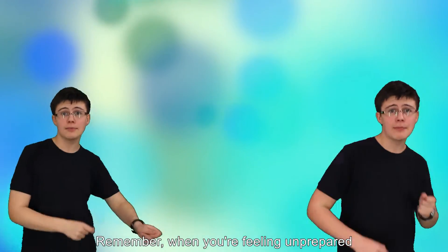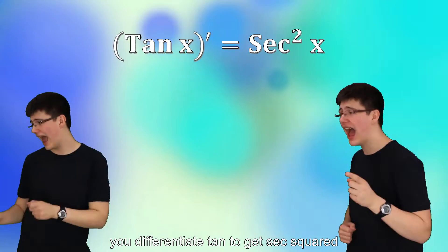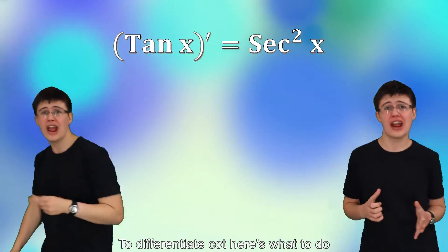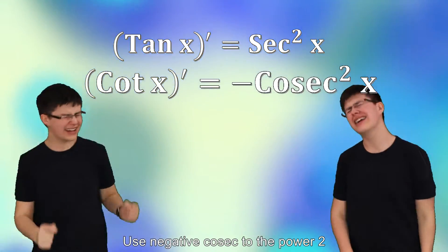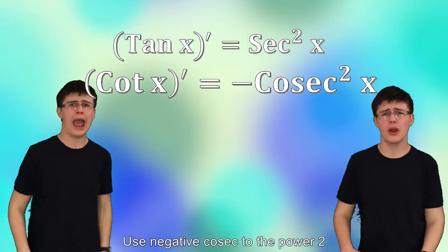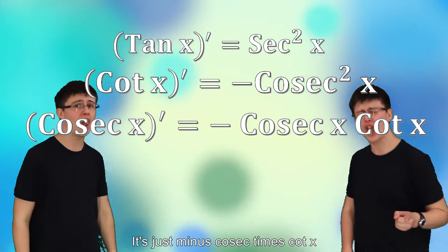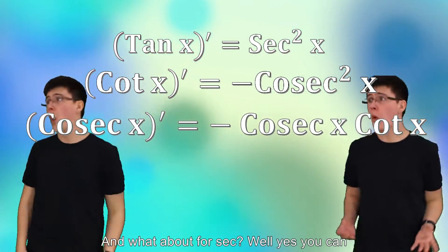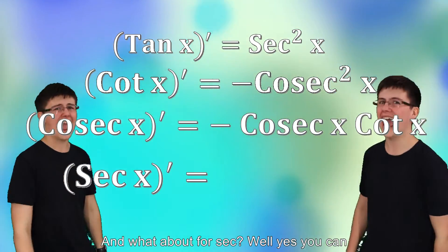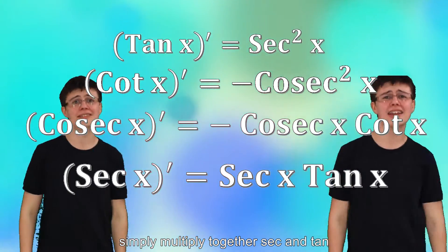Remember when you're feeling unprepared, you differentiate tan to get sec squared. To differentiate cot, here's what to do: use negative cosec to the power two. And if you've got cosec, don't be stressed. Just minus cosec times cot x. And what about the sec? Well yes, you can simply multiply together sec and tan.